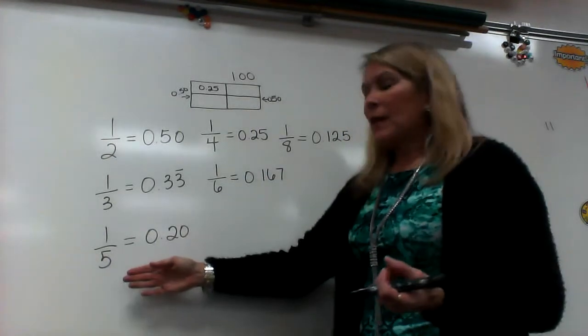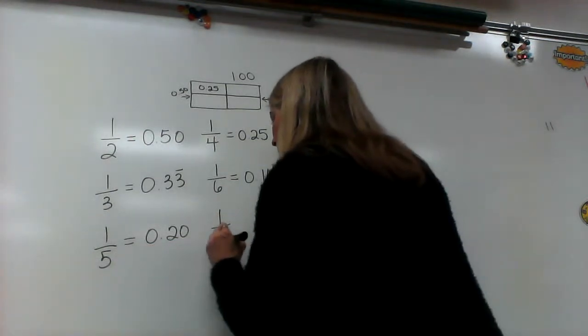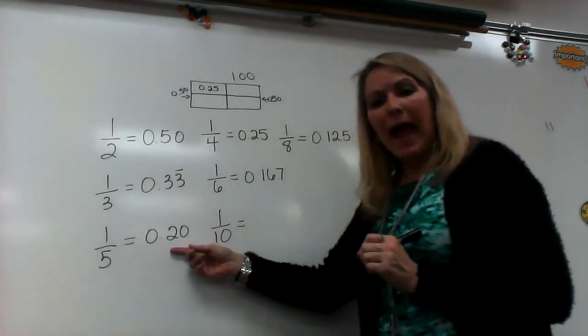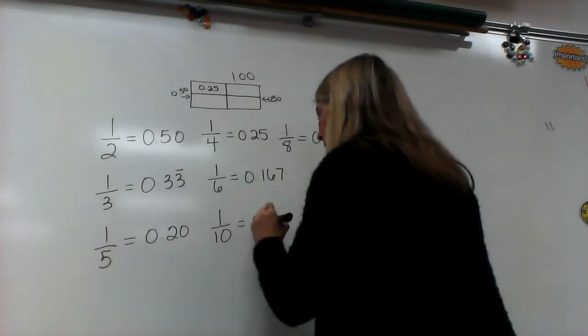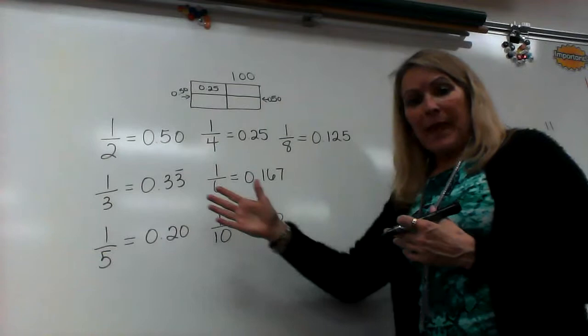And then, with my fifths, if one-fifth is twentieth, if I double my denominator, then I'm going to need to half my decimal. So, one-tenth is equal to ten-hundredths. So, that was really simple.